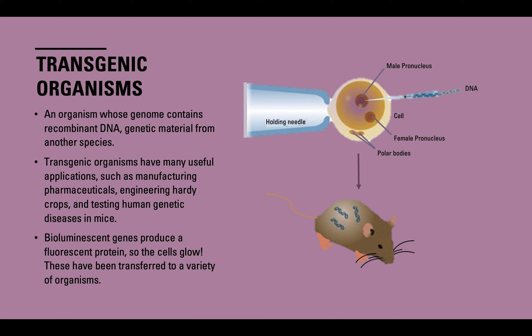These bioluminescent genes have been transferred into a variety of organisms for scientific purposes. This image shows the process of creating a transgenic organism. Here we have a holding needle attached to a small cell with a pronucleus — a female pronucleus, a male pronucleus, and polar bodies. We're taking DNA from a different organism and inserting it into the male pronucleus, which is then inserted into a mouse. For example, this DNA may come from another mouse, a different-colored mouse, or a totally different organism, and it can be put into a cell that is then transferred into a living organism like a mouse.